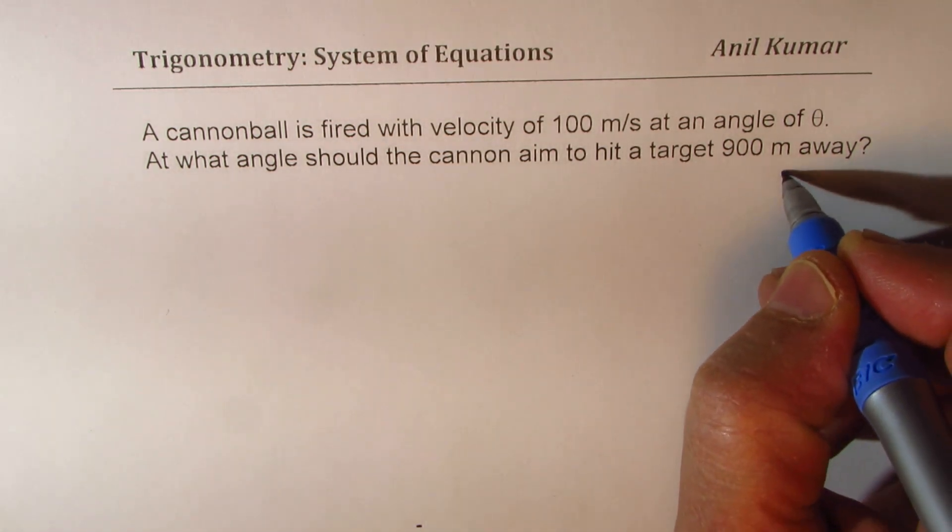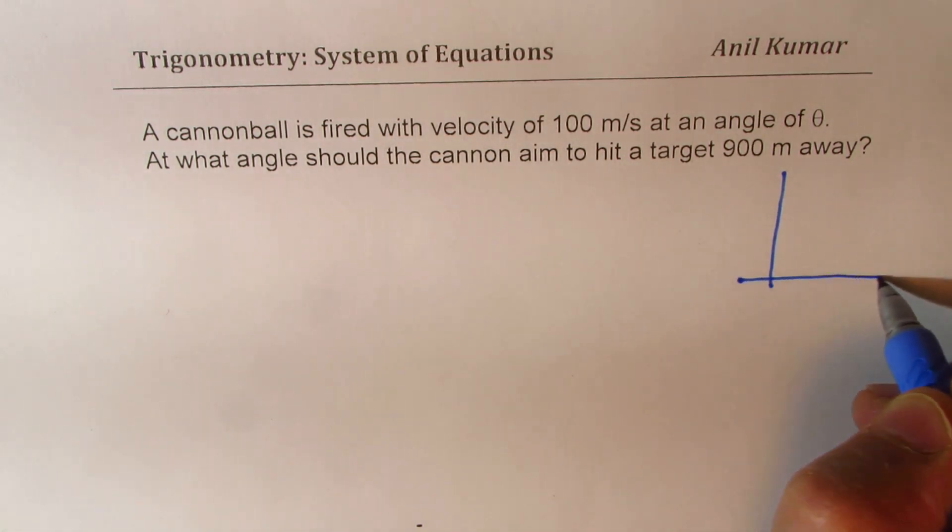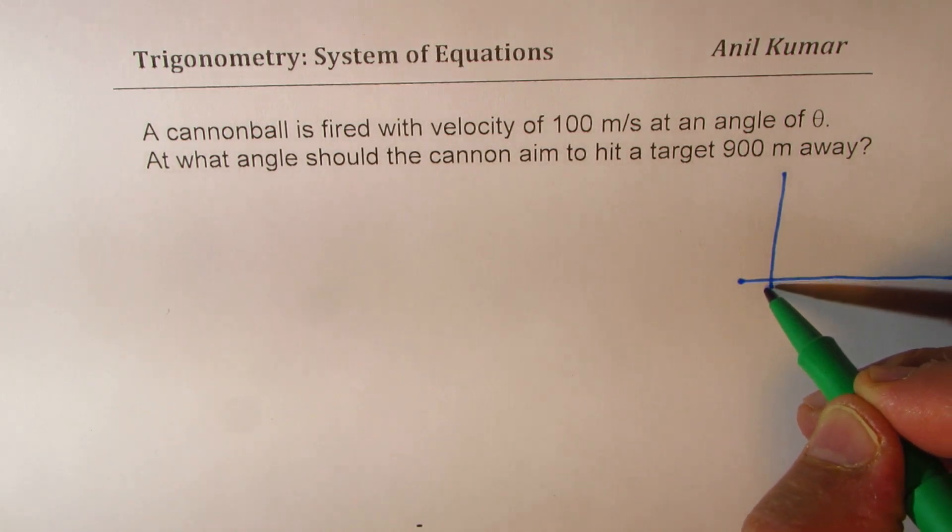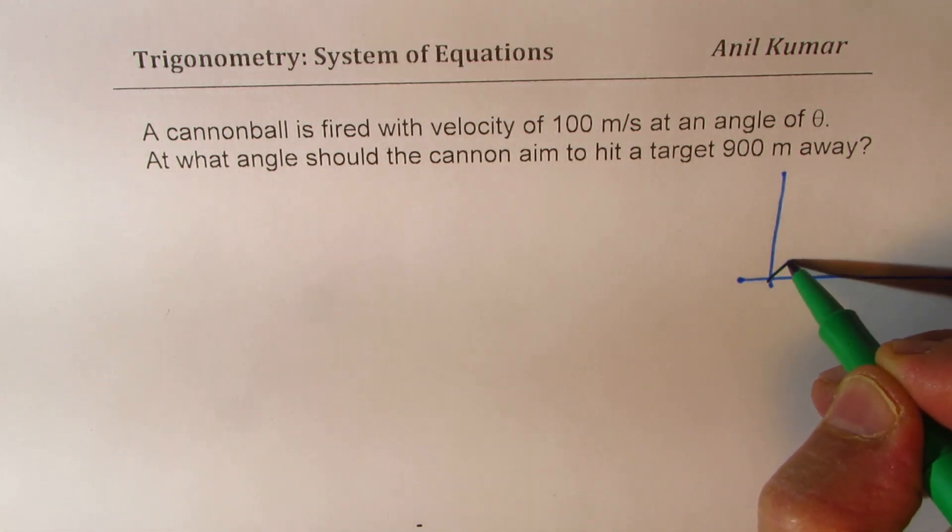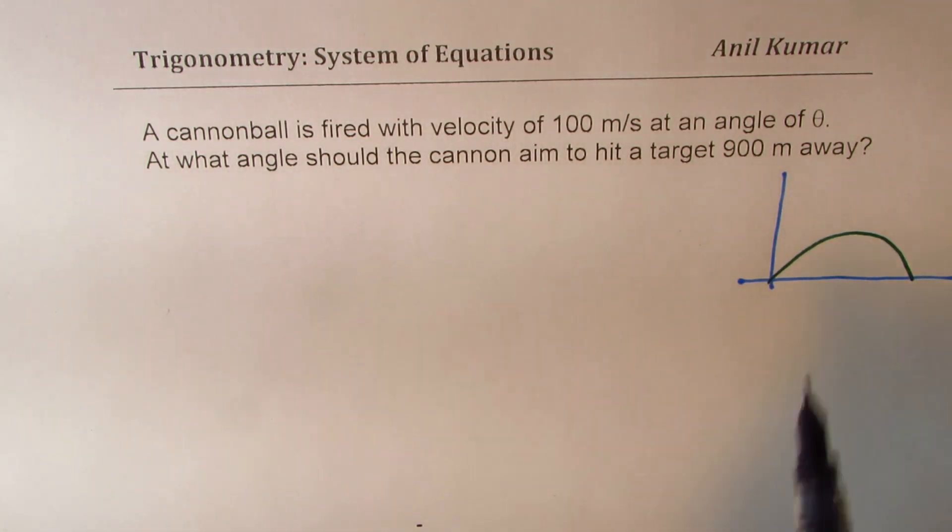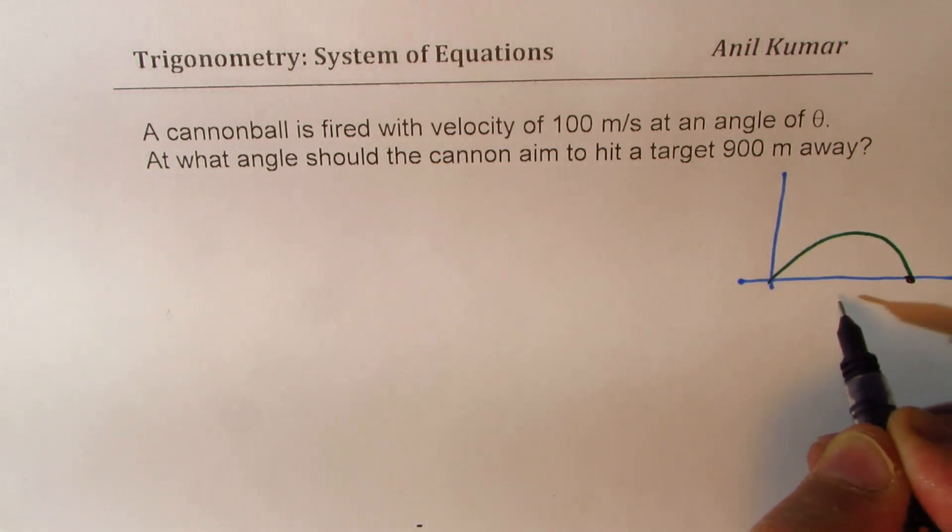So here is the situation. We are assuming that the cannonball has been fired from the ground level at an angle of theta. So it goes kind of like this and we want to hit a target which is 900 meters away. So this is 900 meters away.